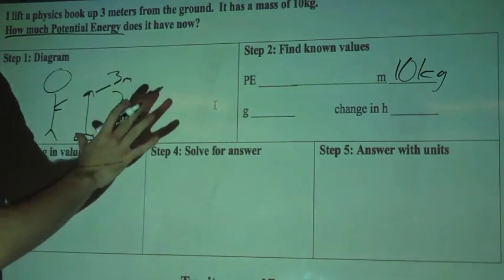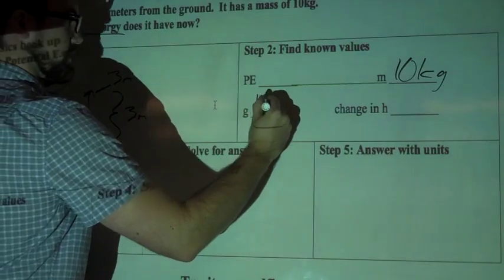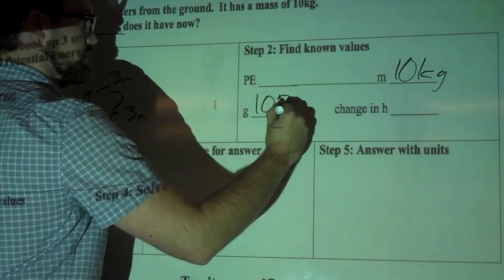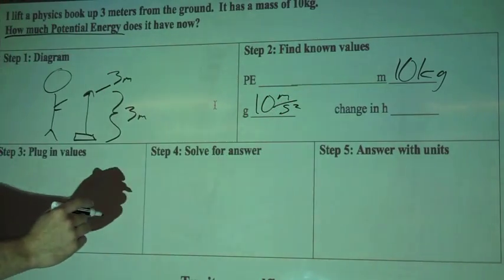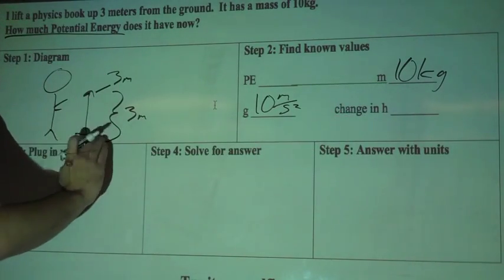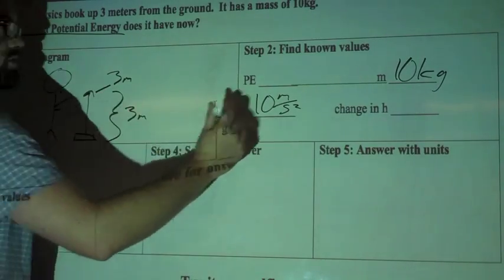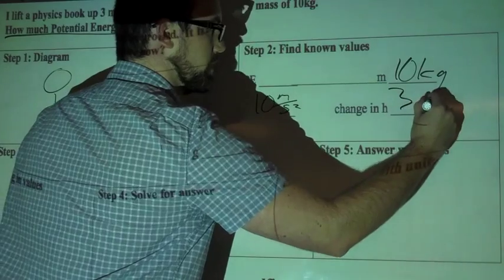Gravity - this doesn't say that we're on the moon or Jupiter, so I'm going to assume it's on Earth, so that's 10 meters per second squared. And then change in height. We know we lifted it from the ground up to 3 meters above the ground, so the change is 3 meters.